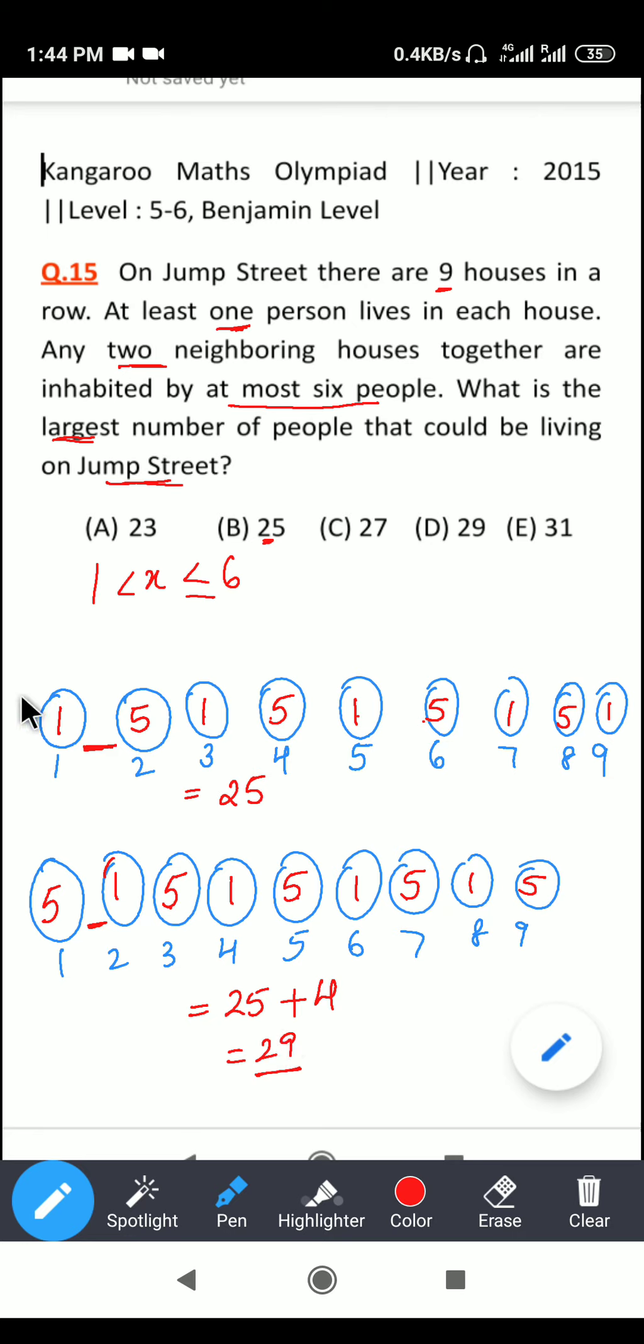So in this case, in the earlier combination, the maximum number of people that I found was 25. But if I try this pattern, the total number of people that we find is 29. So the question is asking for the largest number of people, so since 29 is the bigger number that I have, so my answer will be option number D, 29.